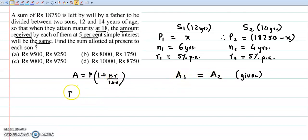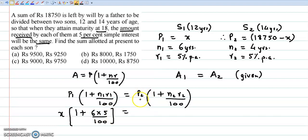So we get P1 into 1 plus n1 r1 upon 100 is equal to P2 times 1 plus n2 r2 upon 100. Now P1 is x into 1 plus n1 which is 6, rate is 5, so 6 times 5 upon 100. Here we have P2 value that is 18,750 minus x, bracket 1 plus n2 is 4, rate is 5%, so 4 into 5 by 100.